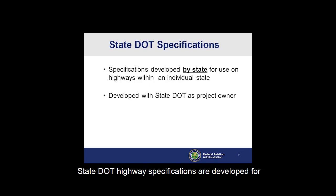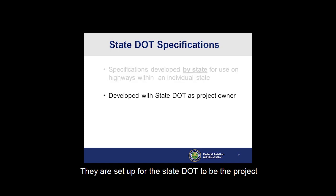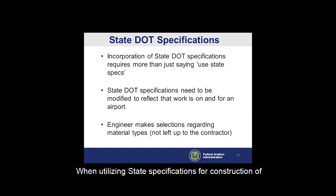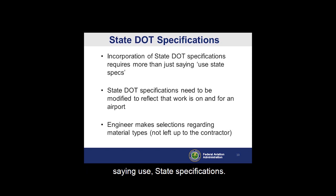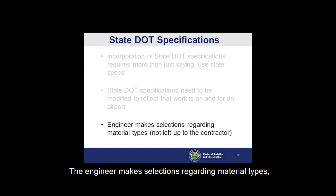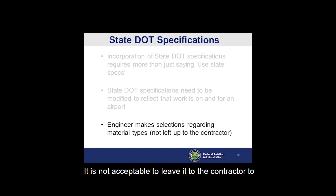State DOT highway specifications are developed for highway construction within a state, based upon highway loadings. They are set up for the State DOT to be the project owner, and the State DOT is responsible for checking, approving, and accepting materials and construction. When utilizing state specifications for construction of pavements on an airport, incorporation requires more than just saying 'use state specifications.' The state specifications need to be modified to reflect that the work is on and for an airport. The engineer makes selections regarding material types — this is not left up to the contractor. It is not acceptable to leave it to the contractor to decide which state material specification to use.